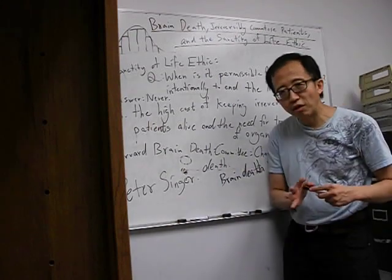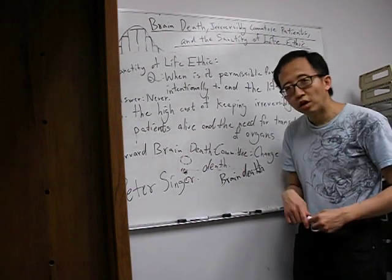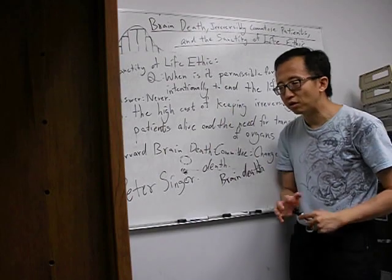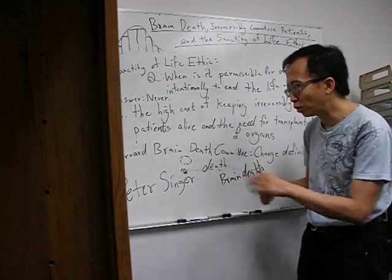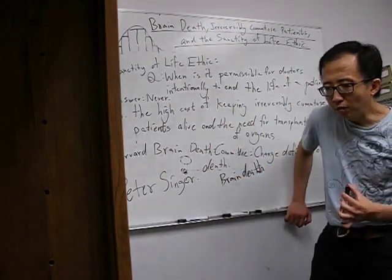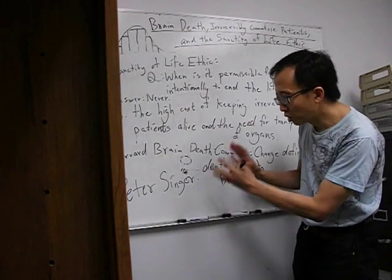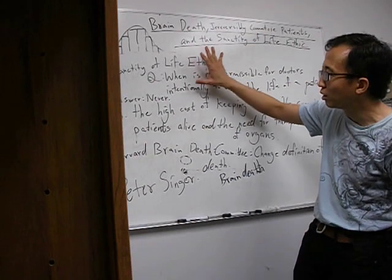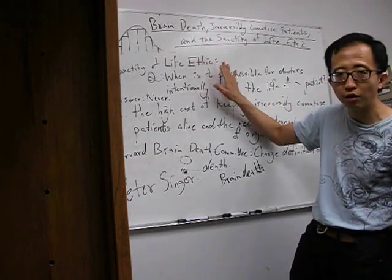Many people still believe that persons who are brain dead are still actually alive because of all these things that they observe. So, changing the definition of death yet again to include the cessation of only higher brain functions is a very artificial move according to Peter Singer. Singer believes that it is a much better approach to simply deny the correctness of the sanctity of life ethic altogether.